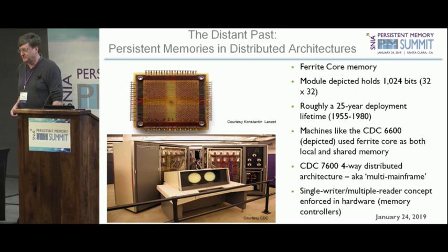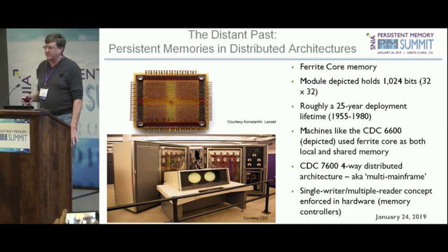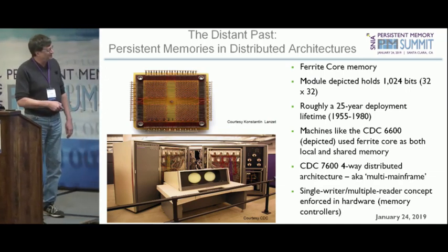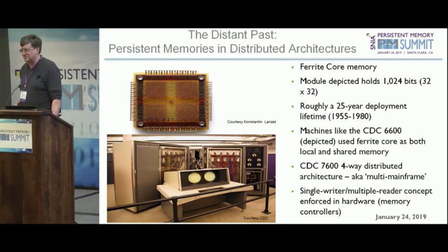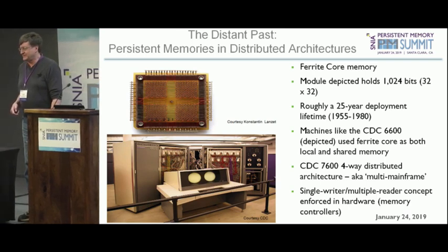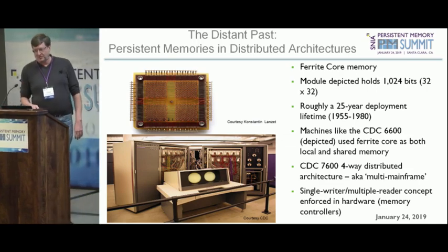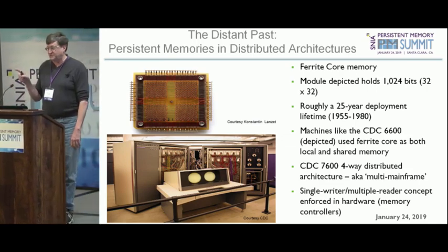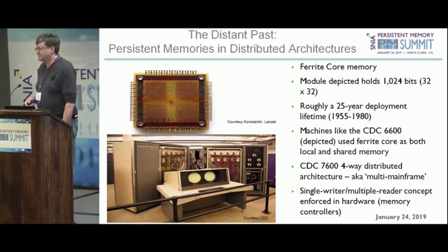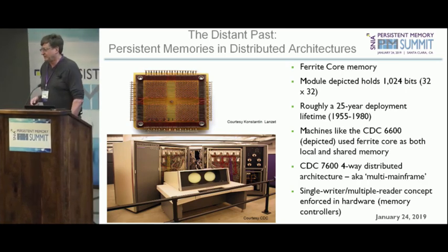Circa early 1960s, ferrite core. Ferrite core really didn't go away until the early 80s. Can you identify the machine in the picture? There is a hint in the picture. That is a Control Data 6600. The two main designers of that machine were Seymour Cray — he was actually the second designer — and Jim Thorne, the first designer. Read his book, dated 1970, which talks about the architecture of this groundbreaking, fantastic machine.